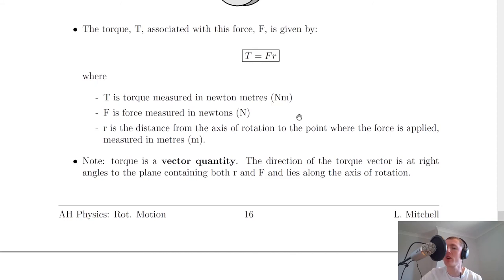We can see that torque should be measured in newton metres because torque equals the force times the distance from the axis of rotation. Your force would be measured in newtons and your distance would be measured in metres. Because those two quantities are multiplied together, we get newton metres.